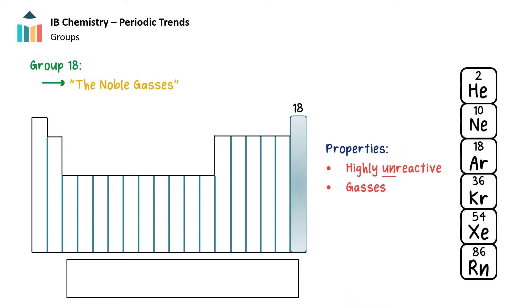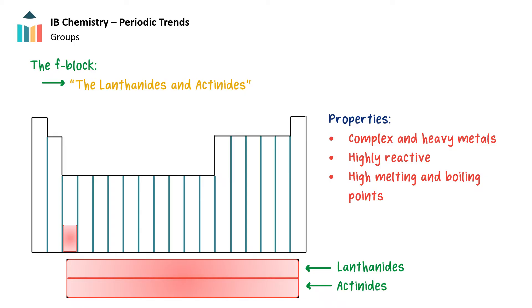Group 18 contains elements which all have a full octet of outermost electrons. These are called the noble gases and are all highly unreactive. Some elements also contain occupied f orbitals. These elements are positioned at the start of the d block in periods 5 and 6 and are called the lanthanides and the actinides. To make the periodic table easier to draw out, they are usually listed below the main table.